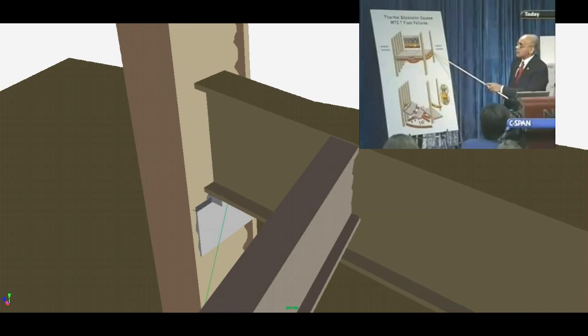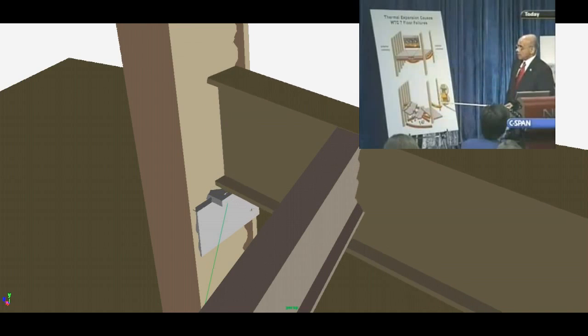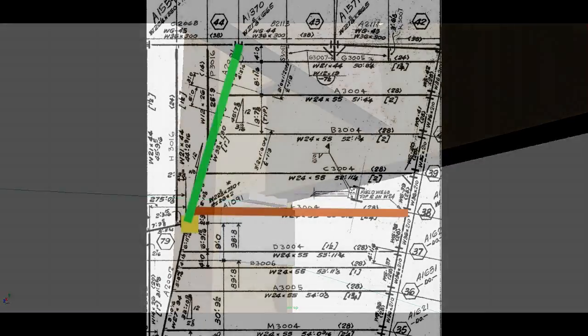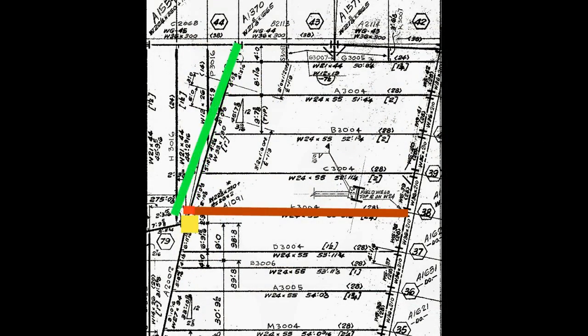One of the things that NIST claimed may have happened is that as this girder is pushed by the beams, it can break the connections with the column. So let's examine just how valid that claim is. We wanted to find out just how far these beams would expand and how far they would have to expand to cause the girder to fail.